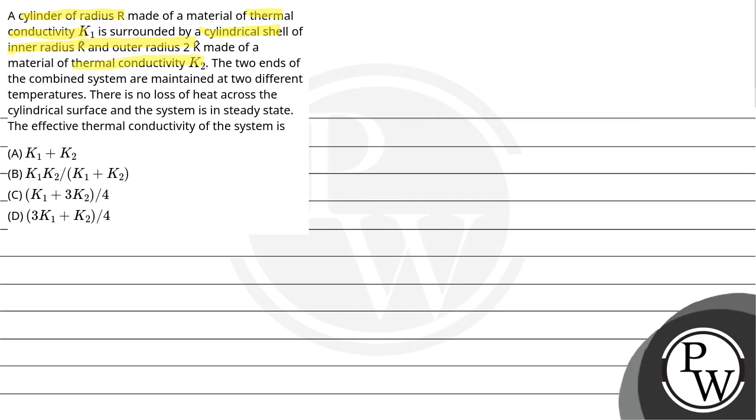The two ends of the combined system are maintained at two different temperatures. There is no loss of heat across the cylindrical surface and the system is in steady state. The effective thermal conductivity of the system is: option A: K1 plus K2, option B: K1 K2 upon K1 plus K2, option C: K1 plus 3K2 upon 4, and option D: 3K1 plus K2 upon 4.